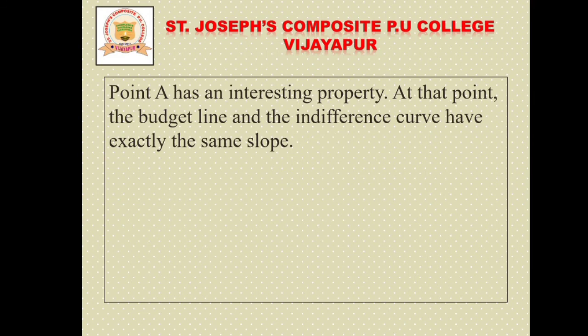This is the optimal choice of consumer. Finally, we can conclude that the optimal choice of consumer is achieved when the consumer's indifference curve and budget line combine together. When the budget line and indifference curve come together, the consumer gets the maximum level of satisfaction. In this case, point A is the optimal point. In the next episode, we will continue with further concepts. Until then, practice this 6-marks question. Thank you.